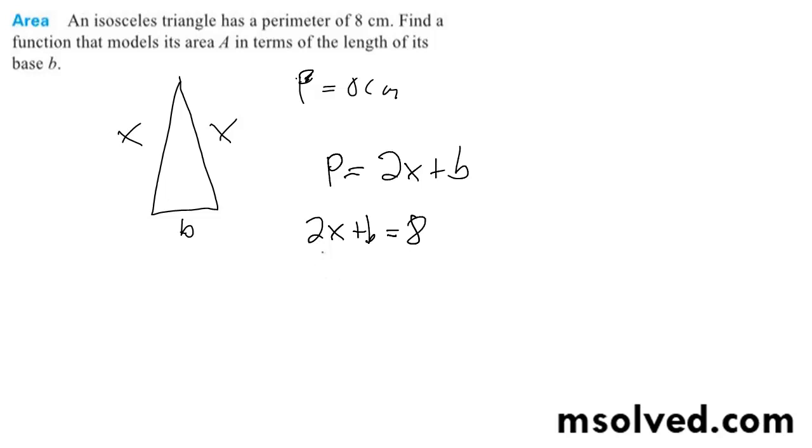So what we have is x. So we subtract over there, so 2x is equal to 8 minus b divided by 2. So x is going to be 8 minus b divided by 2.